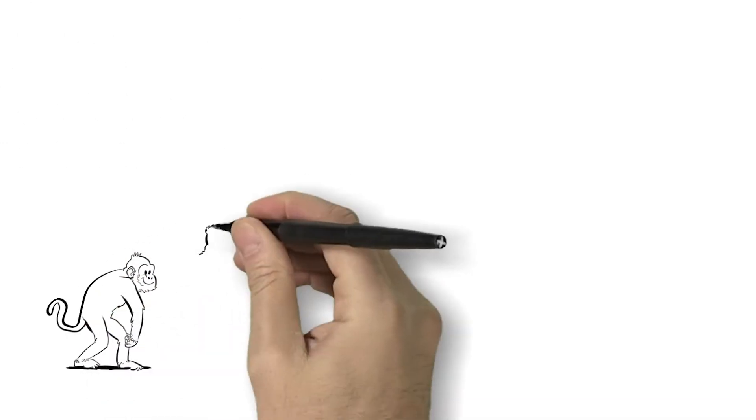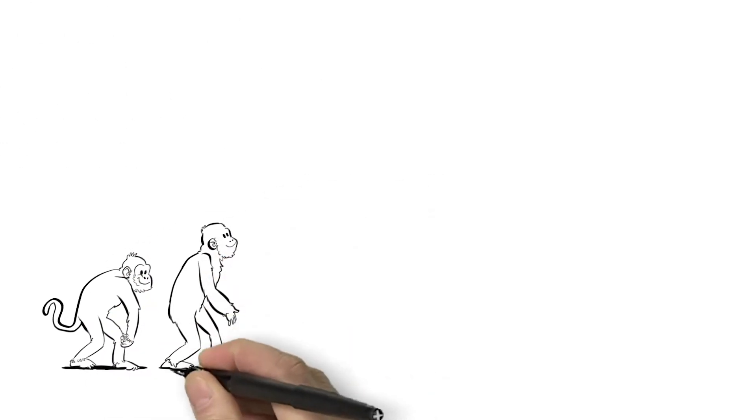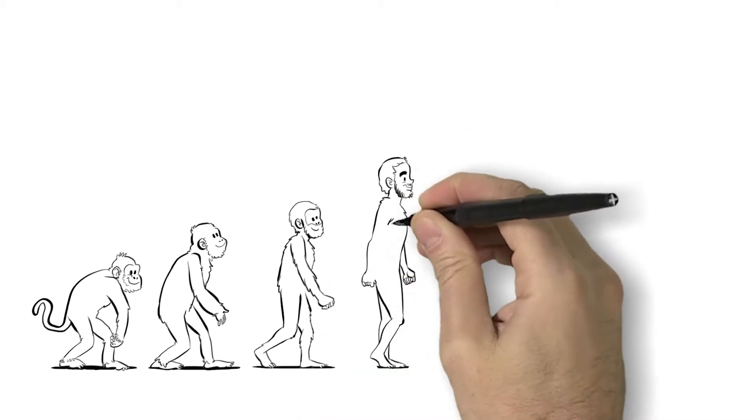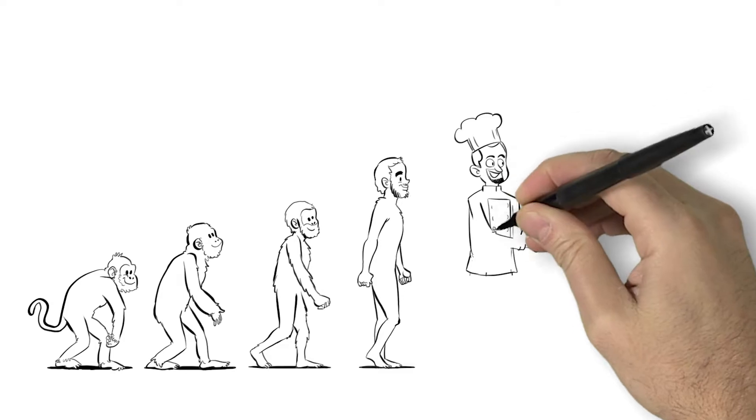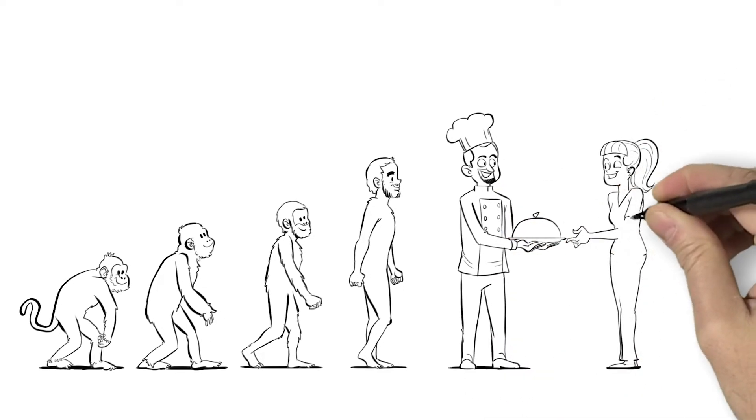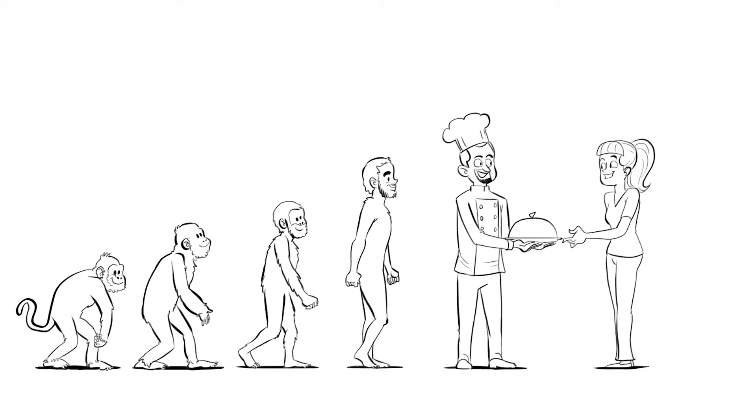By studying aspiring chefs running pop-up and underground restaurants, a researcher from the University of Oxford discovered that many modern entrepreneurs forged their pathways to entrepreneurship over time, developing entrepreneurial identities as other people legitimized their work.